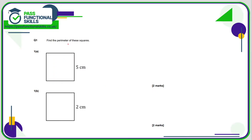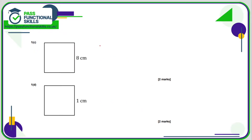What are the perimeters of these squares? Squares have equal side lengths, so that's just 5 times 4, which is 20 centimetres. This one is 2 times 4, which is 8 centimetres. Here it's 8 times 4, which is 32 centimetres, and here 1 times 4, which is 4 centimetres.